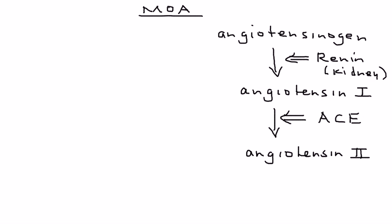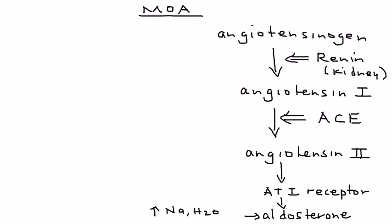Now angiotensin II later goes to the angiotensin II receptor, and that leads to the production of aldosterone. This is the hormone that increases sodium and water reabsorption, and that results in increased blood pressure.